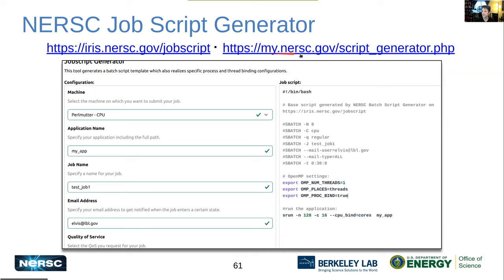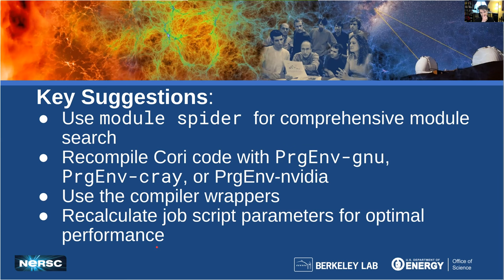To summarize my key suggestions: use `module spider` rather than `module avail` — it will show you more things. Recompile your Cori codes on Perlmutter. Try the GNU, Cray, and NVIDIA programming environments — start with the default GNU and move to others. Use the compiler wrappers because they provide many unseen optimizations and allow you to easily try different programming environments. And revisit your job scripts to recalculate parameters for optimal performance on Perlmutter.